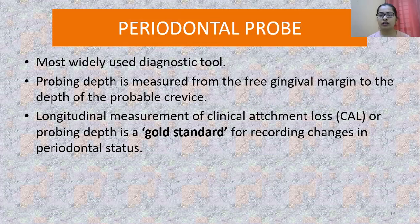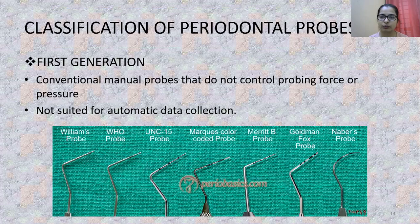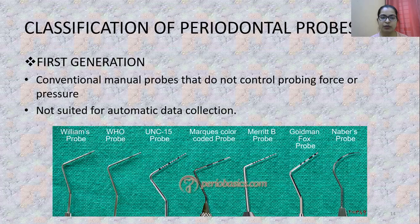The longitudinal measurement of clinical attachment loss or probing depth is the gold standard for recording changes in periodontal status. There have been different generations of probes developed to improve accuracy. First-generation probes are manual or conventional probes with no control over probing force, since manual dexterity varies from person to person. They are not suited for automatic data collection but remain the most widely used.